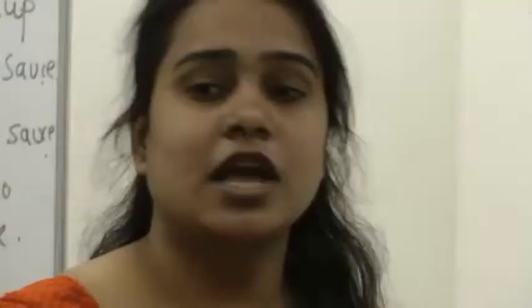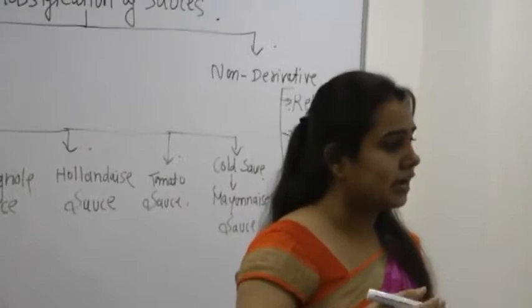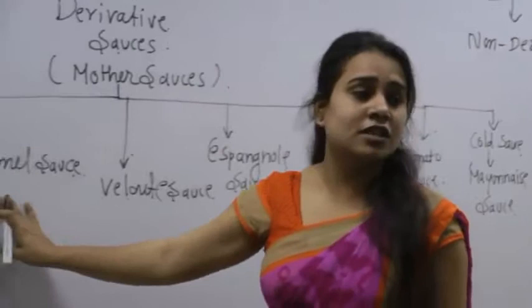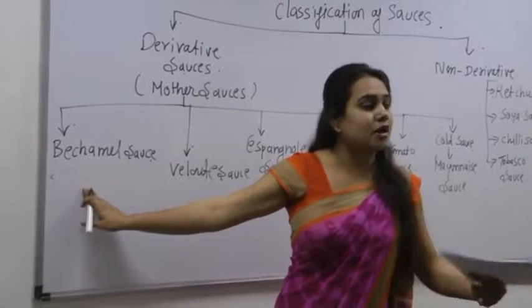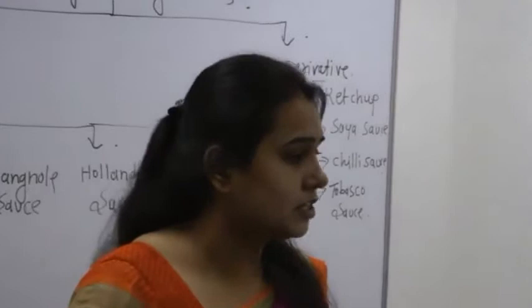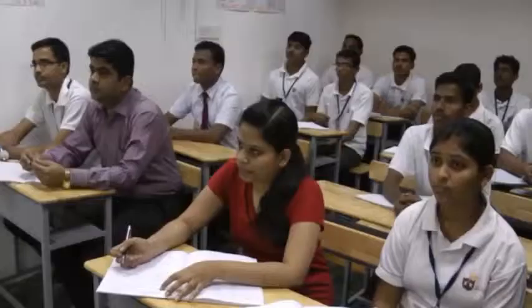We have seen two classifications. One, derivative sauces and second, non-derivative sauces. Derivative sauces are the ones that we can add another ingredient in which we can create another sauce. First one was bechamel sauce, which I added mustard. What would be mustard sauce? If we add cheese, it will become a cheese sauce. So we can derive it and derivate it.